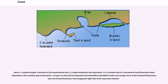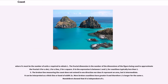Rearranging the right side of the expression, where f divided by epsilon must be the number of units epsilon required to obtain l. The fractal dimension is the number of dimensions of the figure being used to approximate the fractal: 0 for a dot, 1 for a line, 2 for a square. d in the expression is between 1 and 2, for coastlines typically less than 1.5. The broken line measuring the coast does not extend in one direction nor does it represent an area, but is intermediate. It can be interpreted as a thick line or band of width 2 epsilon. More broken coastlines have greater d and therefore l is longer for the same epsilon. Mandelbrot showed that d is independent of epsilon.